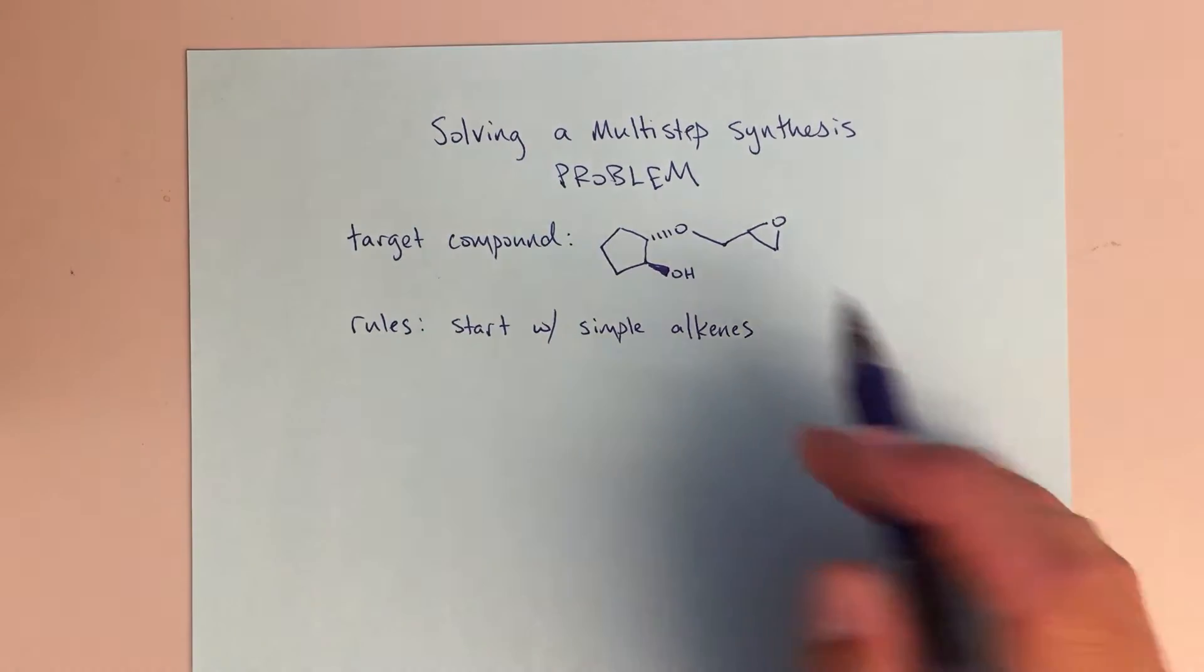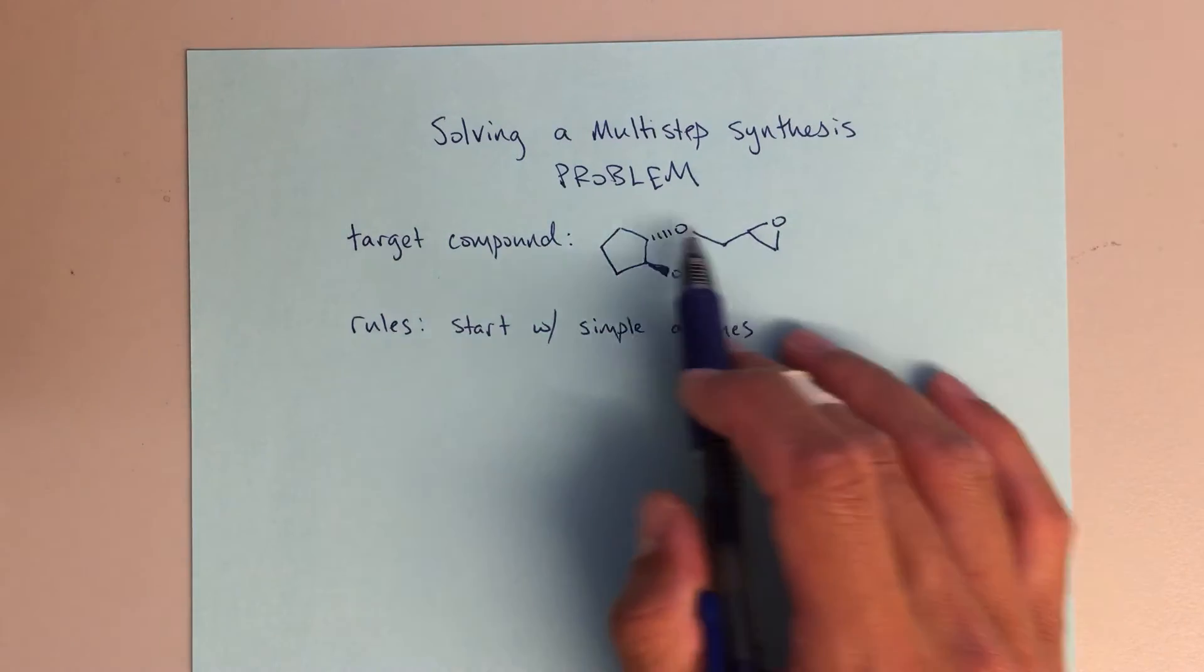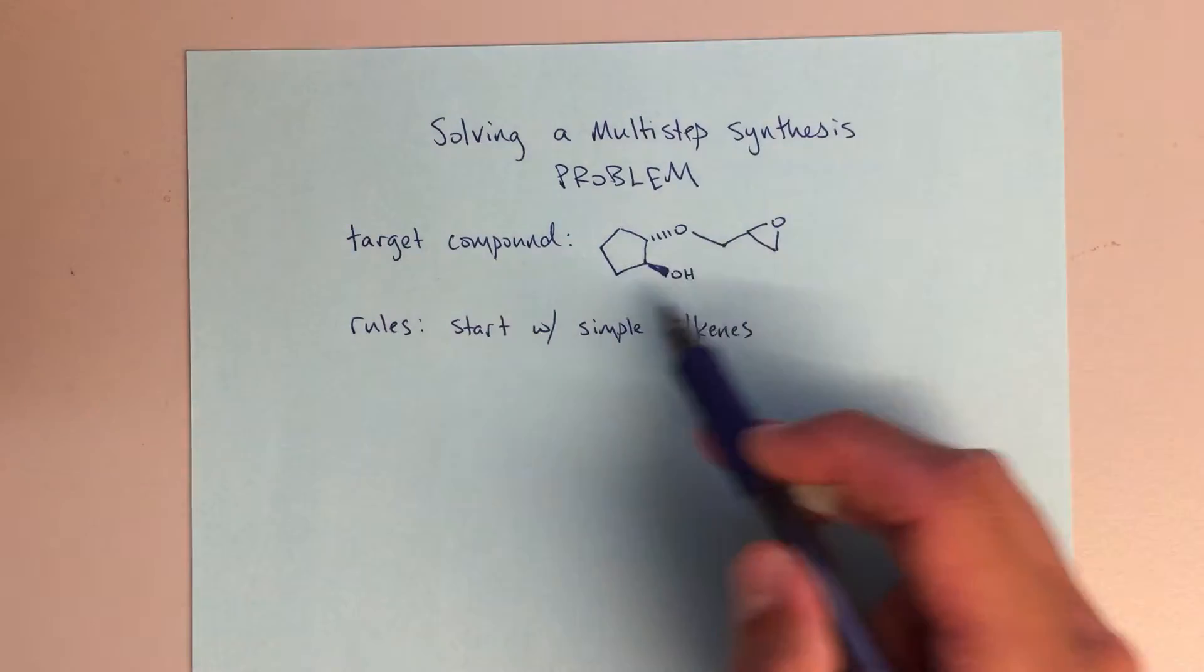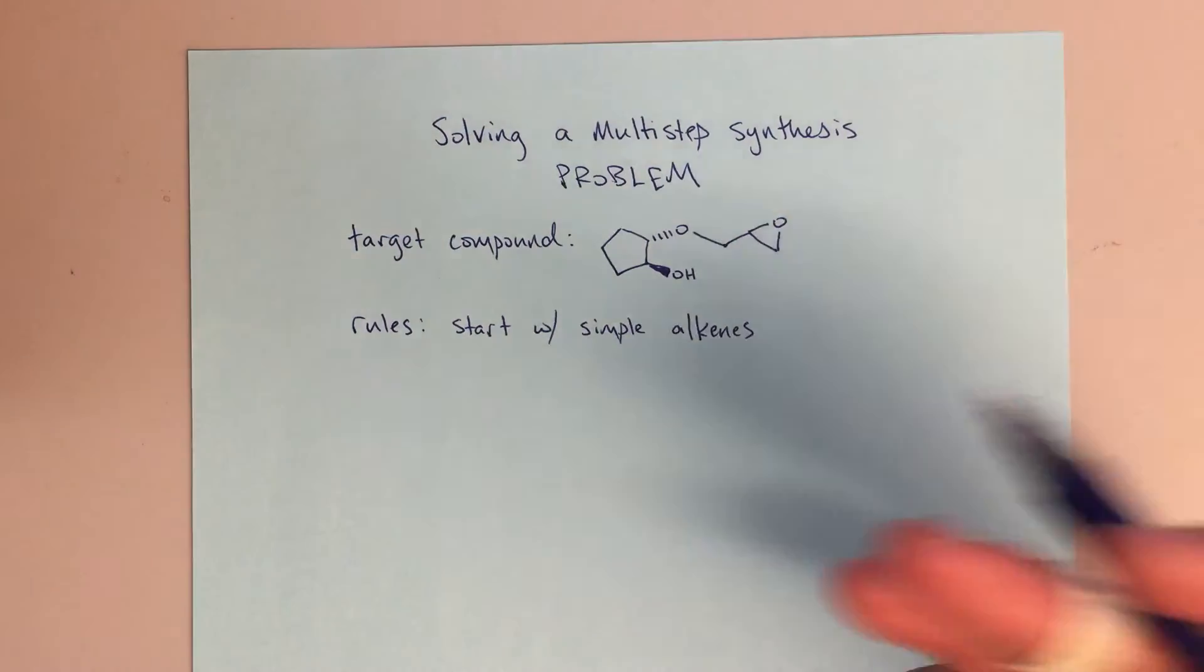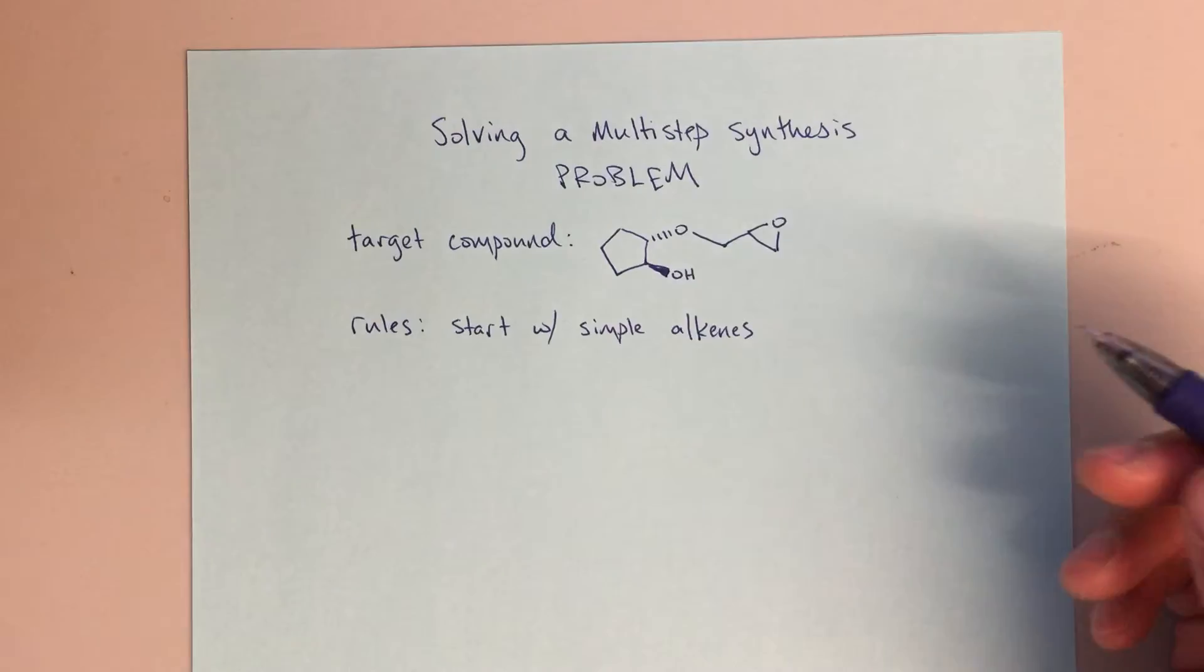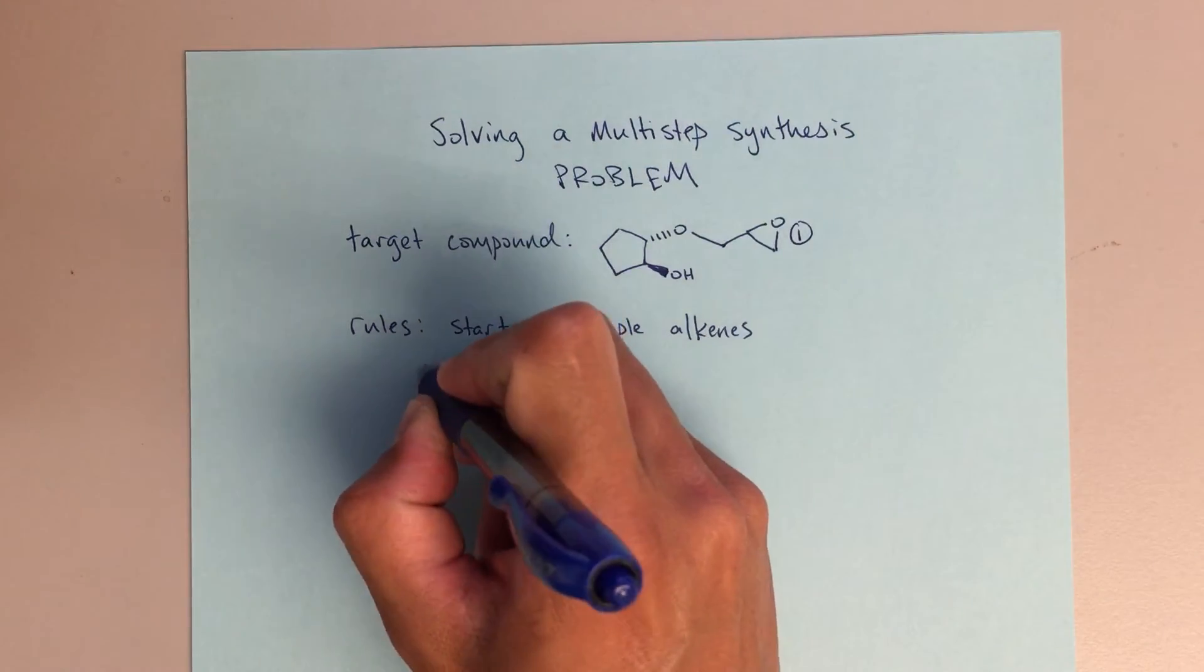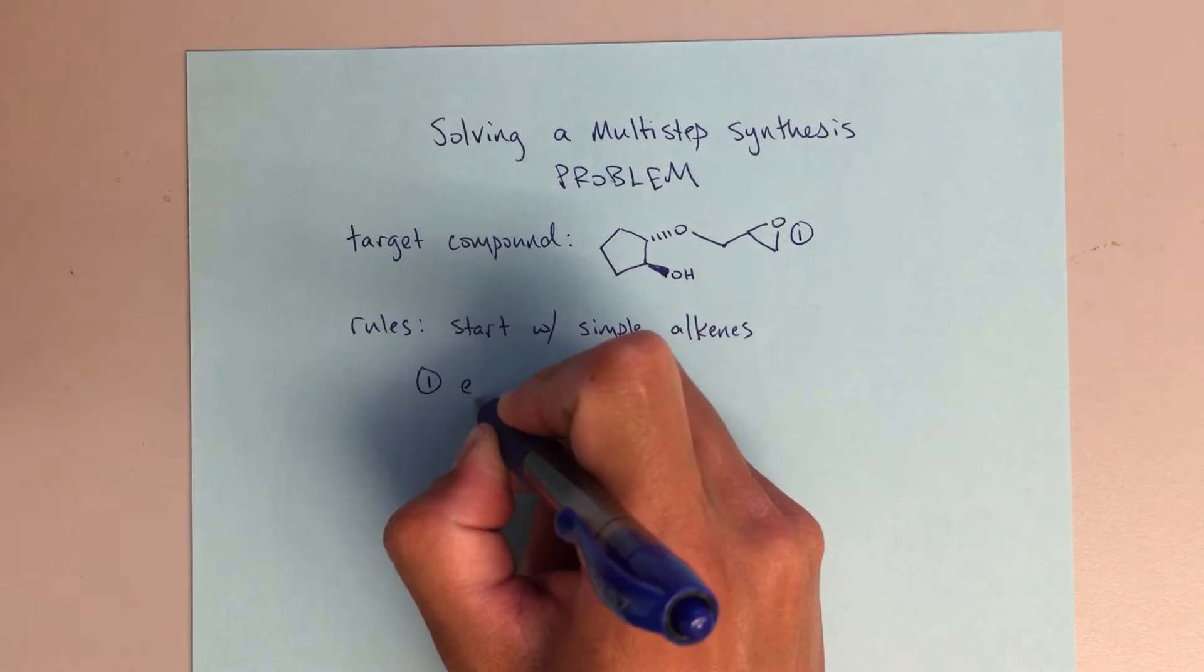The first thing I'm going to do when I'm looking at my target compound is to really break it down, really sort of say, well, what am I seeing here? What can I sort of make notes on right away? The first thing that's going to jump out at us is an epoxide.